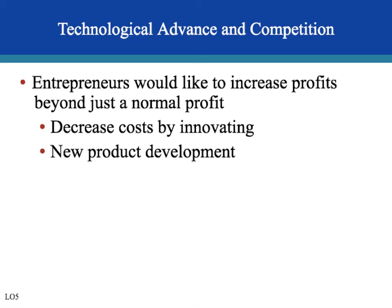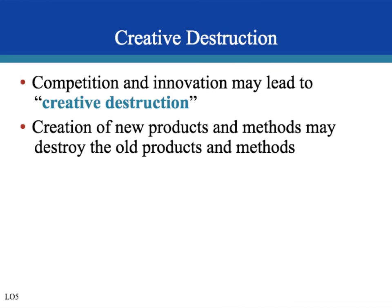Firms constantly seek new ways to decrease costs and increase output. A competitive market structure gives firms incentive to innovate, unlike a monopoly where a single firm faces no competition and can simply charge higher prices to recoup existing costs. New innovations lead to creative destruction — new technology makes old technology obsolete, causing firms using outdated methods to fail while entering firms adapt or innovate further.